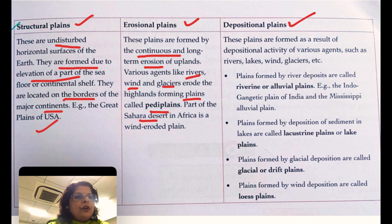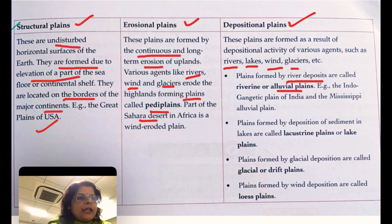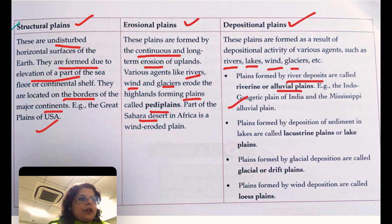Depositional plains are formed mainly due to deposition by rivers, lakes, winds, and glaciers. Plains formed by river deposits are also known as alluvial plains. The best examples are the Indo-Gangetic Plain, the Ganga Plain, and the Mississippi Plain.